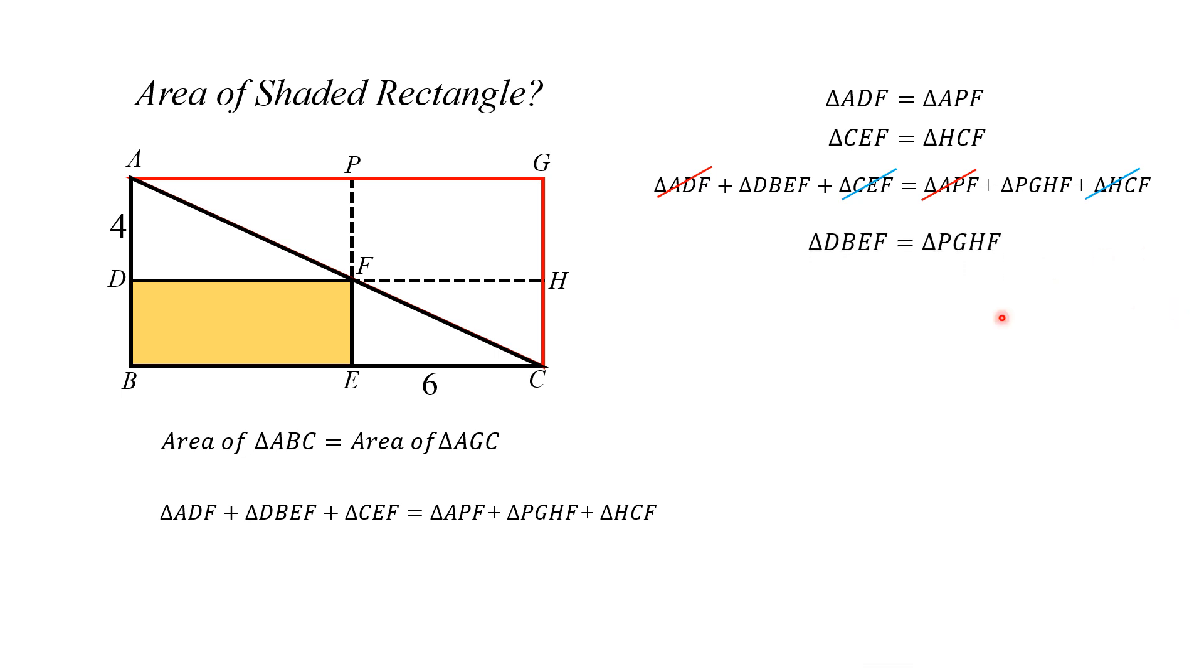Thus from this equation we have area DBEF is equal to area PGHF, means this shaded area is equal to this area. So now we know that area of a rectangle is equal to length times breadth.